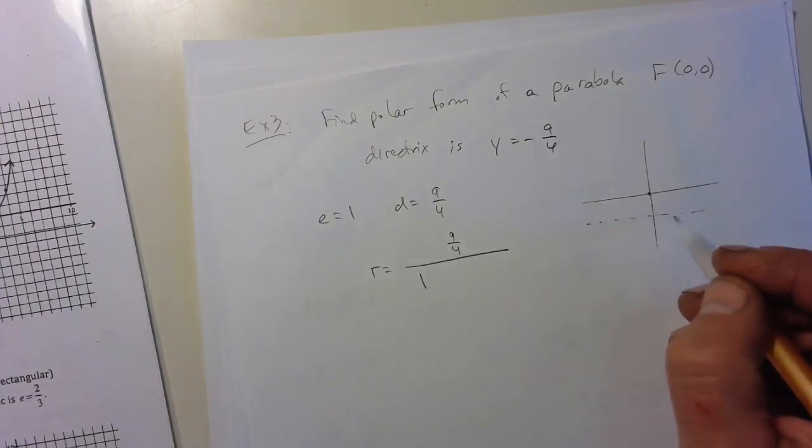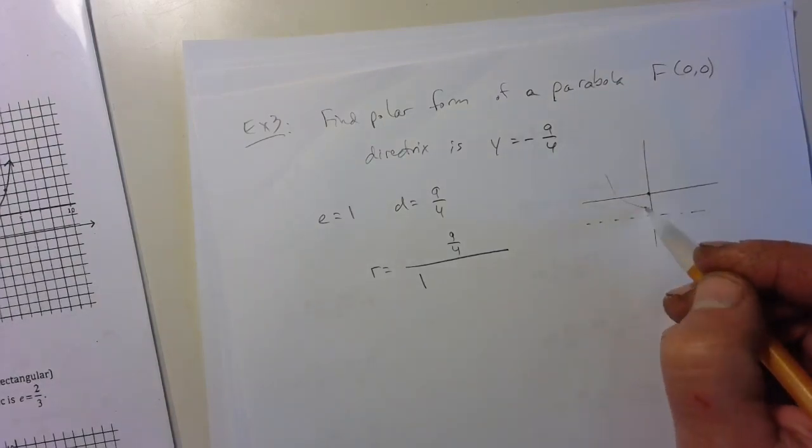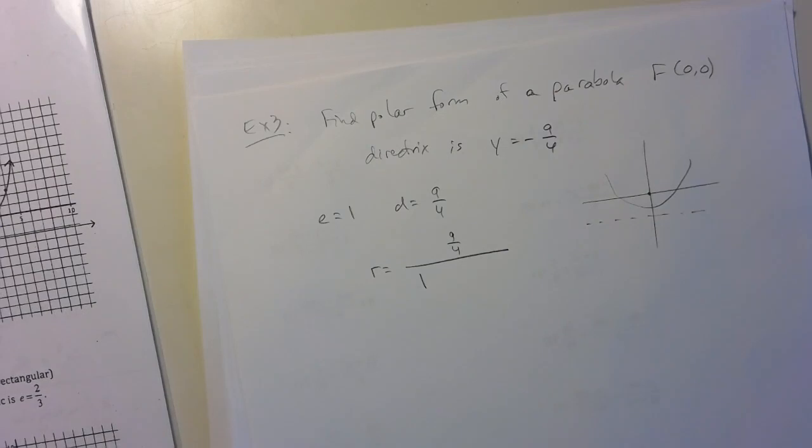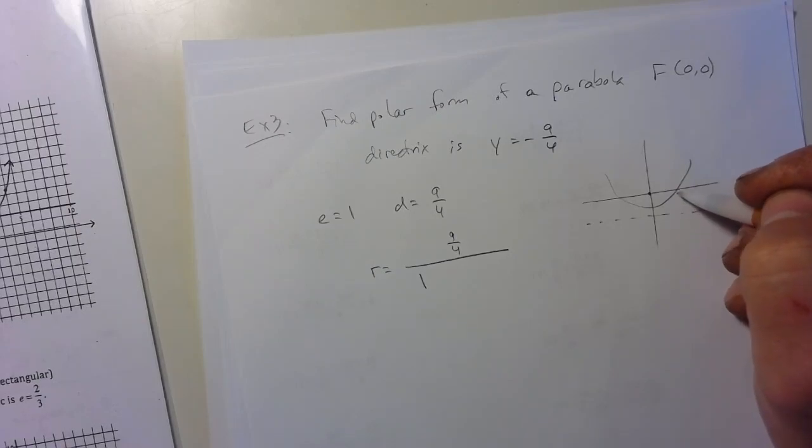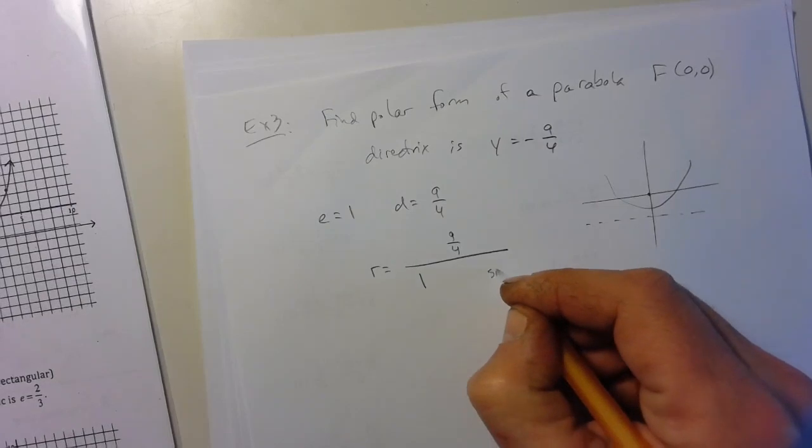So the directrix is down below and it's opening up. So if we think back to what we had there, if we have a horizontal directrix, that means that this distance is vertical. So that's a sine for ourself. So we're definitely going to have the sine of theta.